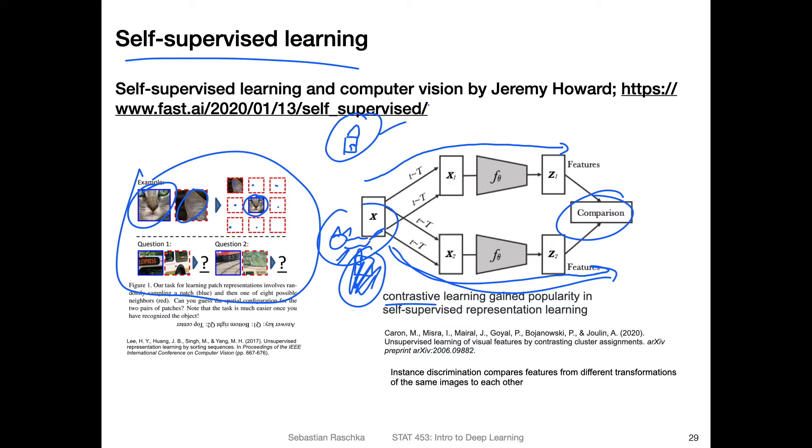You just create the labels yourself by augmenting the image. So if you rotate it, you know it's still the same house. In that way, you created this label for free without having a human label this data, because you can do this all algorithmically. Of course, this is not the target task, but this is usually useful for pre-training a network before you fine-tune it to your target data set.